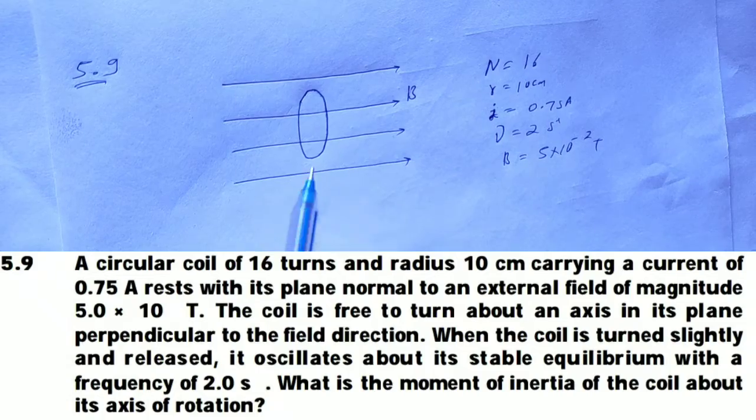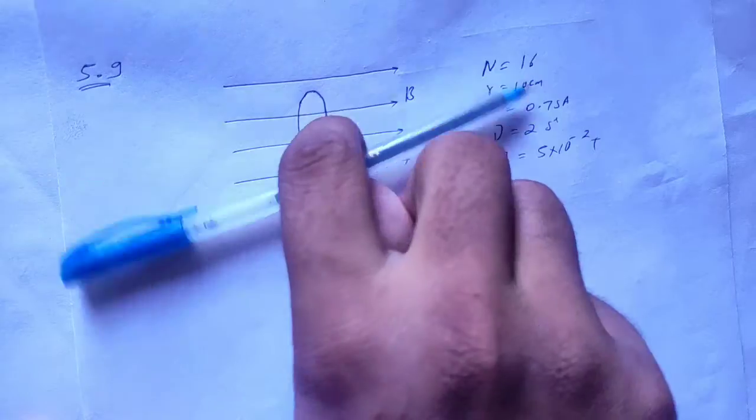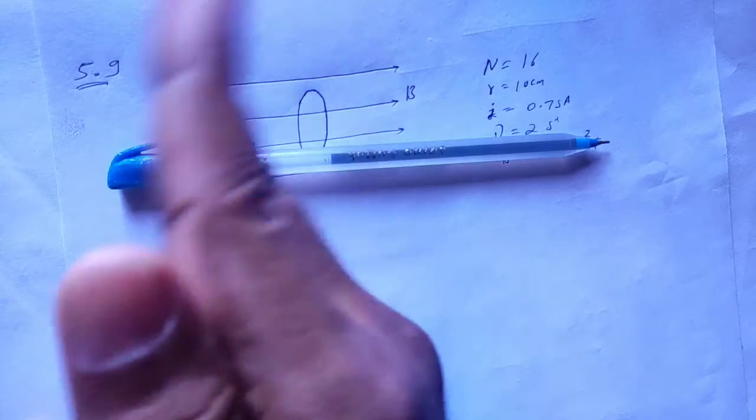So this coil is like this and the magnetic field is going on. The coil is like this. If you slide it a little bit like this, then it will turn like this.